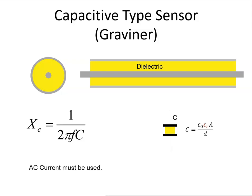A capacitive type sensor is another type of sensor that can be used to detect a fire. It works on the basis of a conductor and a dielectric.